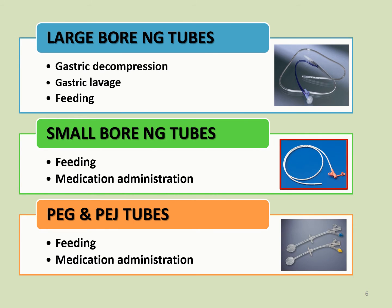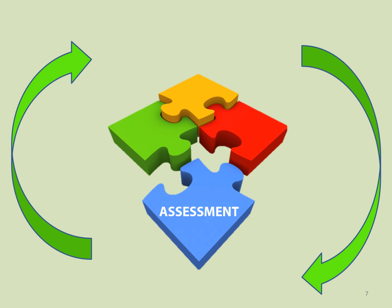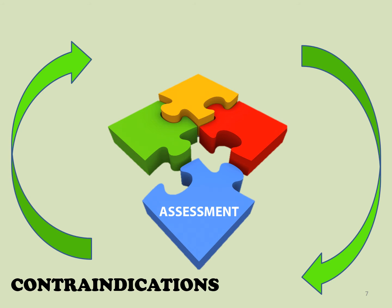Single lumen large-bore nasogastric tubes, such as the Levin, may be used for feeding or intermittent gastric suction. Double lumen large-bore nasogastric tubes, such as the Salem, may be used for gastric lavage, continuous gastric suction, and gastric decompression. Single lumen small-bore nasogastric tubes are used for feeding and medication administration. Percutaneous endoscopic gastrostomy and percutaneous endoscopic jejunostomy tubes are inserted for long-term feeding and medication administration.